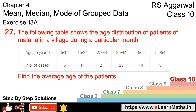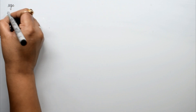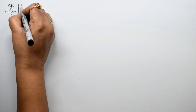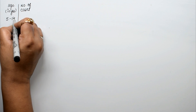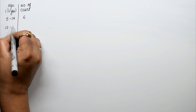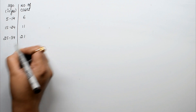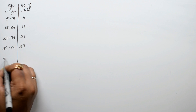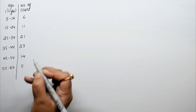We are given age in years and number of cases for malaria patients in a village. The data is: 5 to 14 — 6 cases, 15 to 24 — 11 cases, 25 to 34 — 21 cases, 35 to 44 — 23 cases, 45 to 54 — 14 cases, and 55 to 64 — 5 cases.